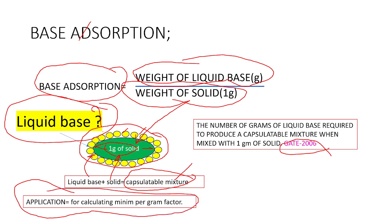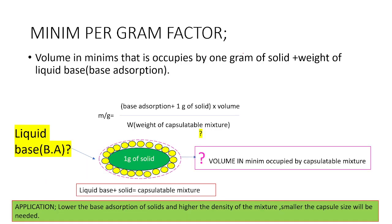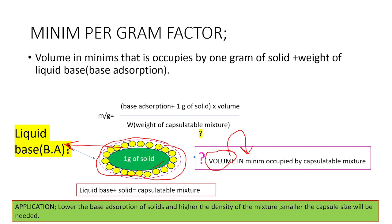The importance of calculating base adsorption is that it is responsible for calculating the minimum per gram factor. The minimum per gram factor is simply the volume occupied by both the liquid base and 1 gram of solid, and that volume needs to be expressed in terms of minimum.